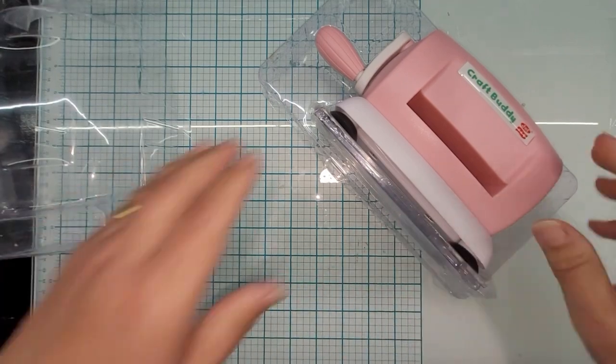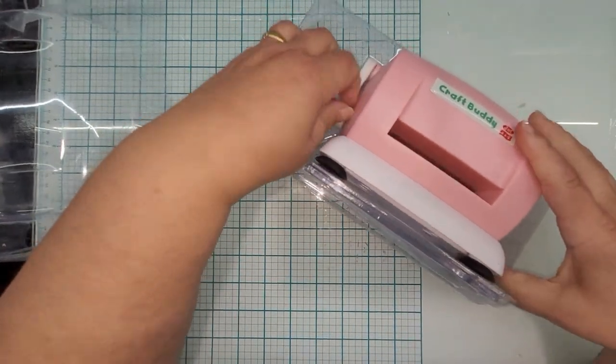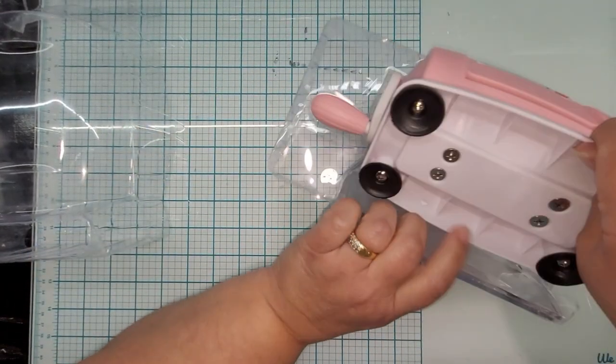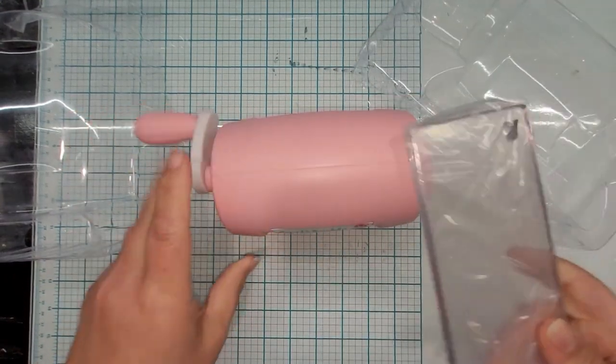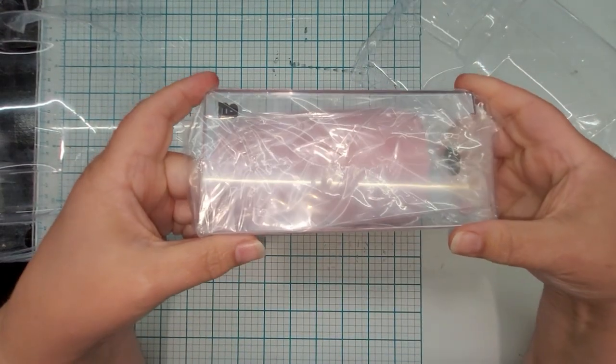Let's get this thing out of the packaging and get it set up and we'll see how it works. It does come with two plates, an A plate and a B plate, and that's all. No other shims or sandwiches or anything of that sort.